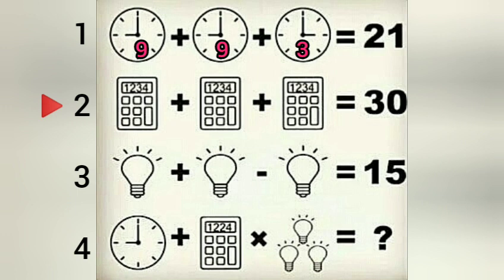Now equation number two. The calculator is 10. 10 plus 10 plus 10 equals 30. The logic is that the calculator has clear digits: 1, 2, 3, 4. So let's add 1 plus 2 plus 3 plus 4, which equals 10.